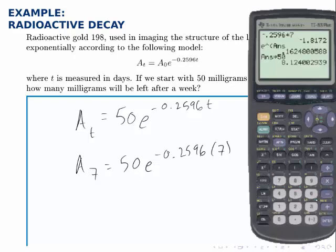This model predicts that after a week, just over 8 milligrams of this gold isotope will be left. Again, because it's decaying, the amount drops from 50 to just over 8 in this week.